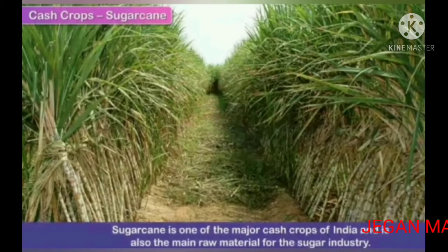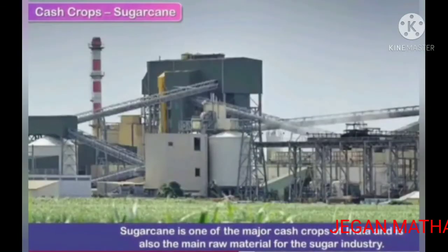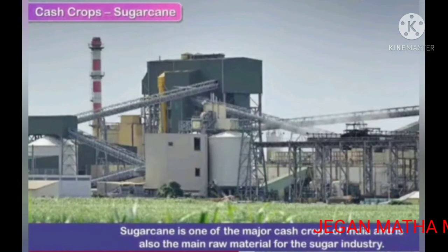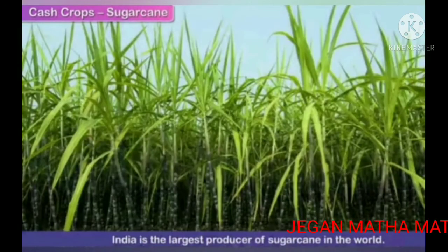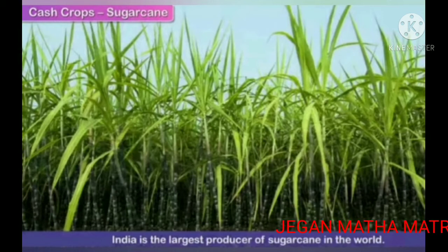Sugarcane is one of the major cash crops of India and is also the main raw material for the sugar industry. India is the largest producer of sugarcane in the world.